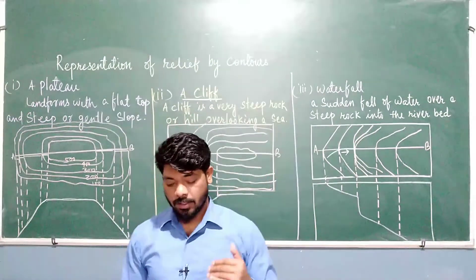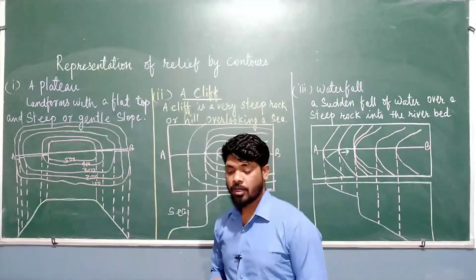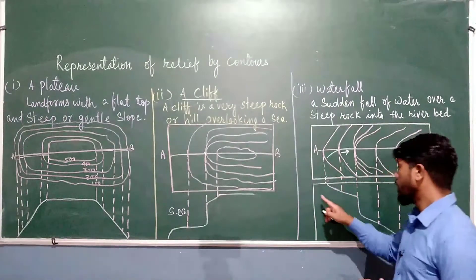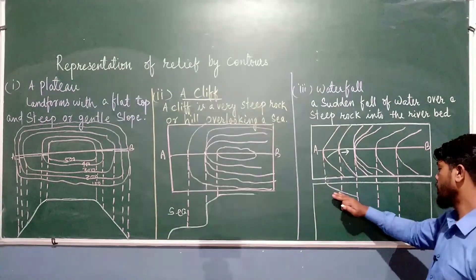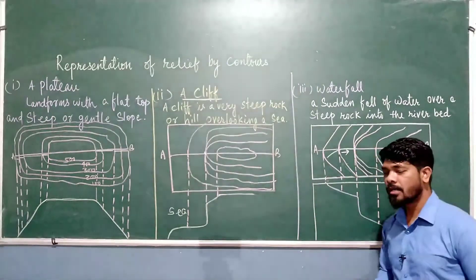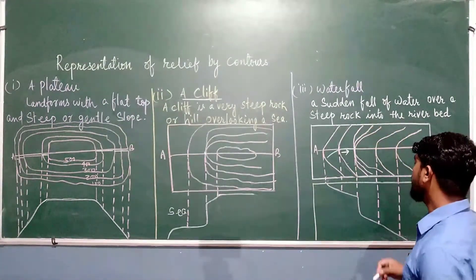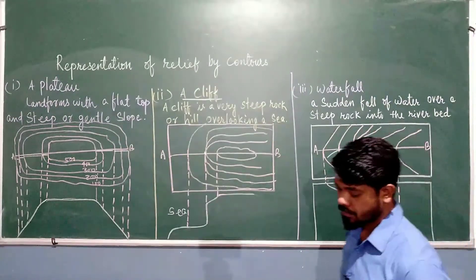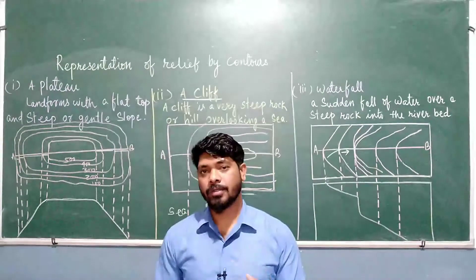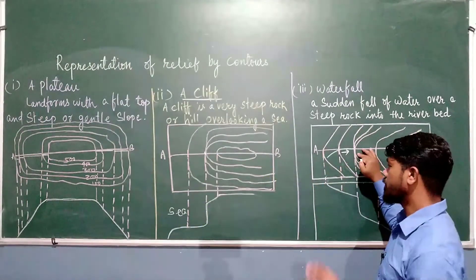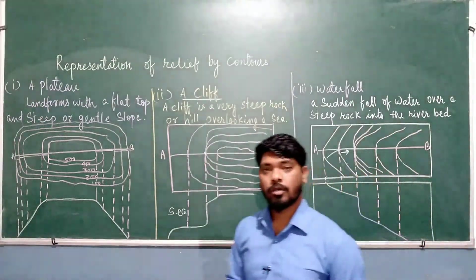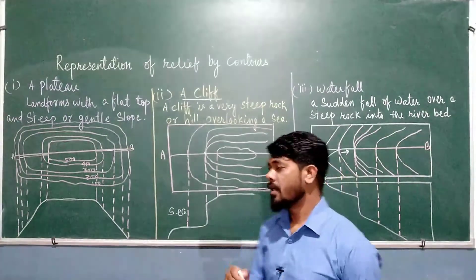The next relief feature is a waterfall. A waterfall is formed when there is a sudden fall of water over a steep rock into the river bed. The landscape is shown with the help of contour lines — you will notice these contours have a V-shape. At the point, three or four contours are again merged, similar to a cliff, but the difference is that a blue line is shown, which indicates a waterfall.